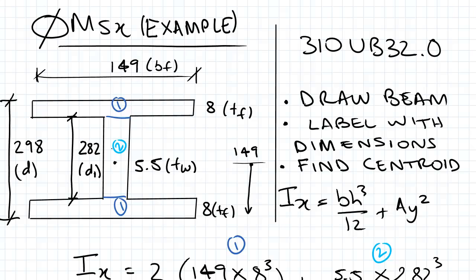Using all that information, what we do is we find the IX values which is BH cubed on 12 plus AY squared.